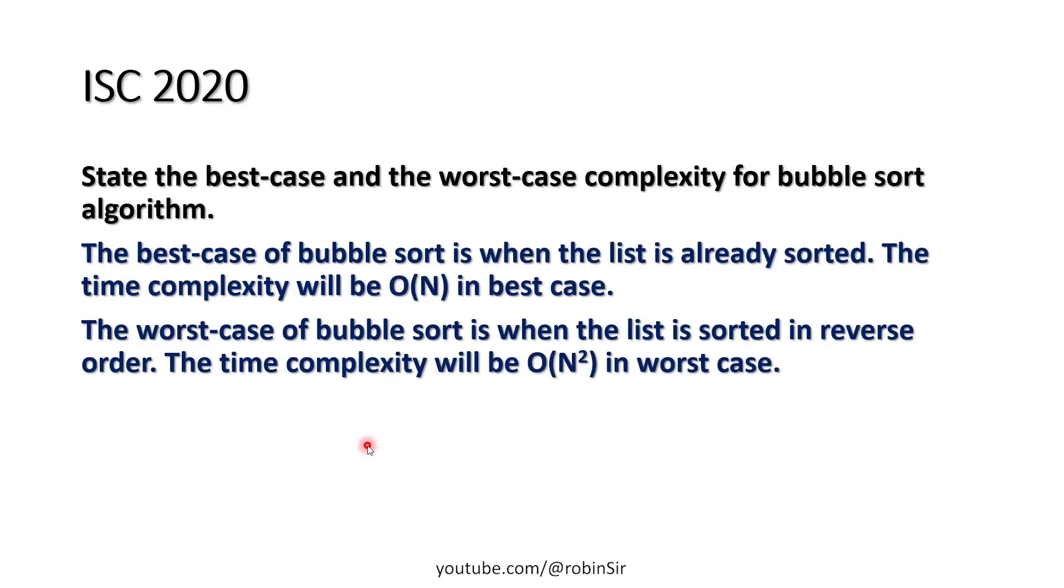ISC 2020 state the best case and the worst case complexity for bubble sort algorithm. Now when would we have best case in a bubble sort? So the best case of bubble sort is when the list is already sorted, and the time complexity in that case would be Big O of N, linear in nature.